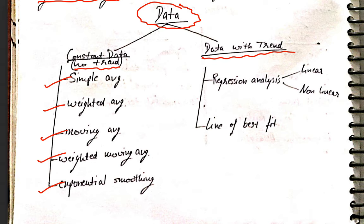The second type is data with a trend. To predict such data we use regression analysis, including the line of best fit, which is part of regression analysis. Regression can be linear or non-linear; we will mostly study linear regression. We obtain the line of best fit to get the trend of the data. Starting from the next class we will cover simple average, weighted average, moving average, and complete the forecasting topic in a couple more lectures. If you have any doubts, ask in the comments or reach me personally. Bye!